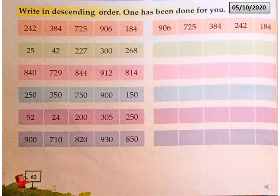Now open your book page number 62 and mention the date. Read the second question: write in descending order. One has been done for you.